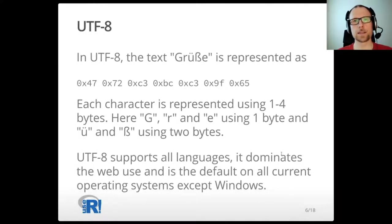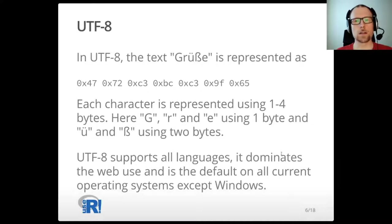UTF-8 is an encoding that maps one character to one to four bytes, so it is a so-called multi-byte character set. The text 'grüße' is represented using the bytes shown here. G, R, and E are represented using the same bytes as in ASCII, and Ü and sharp S are each represented using two bytes as shown here. What is important is that UTF-8 supports all languages. It also dominates web use today and is the default on all current operating systems used with R except Windows.